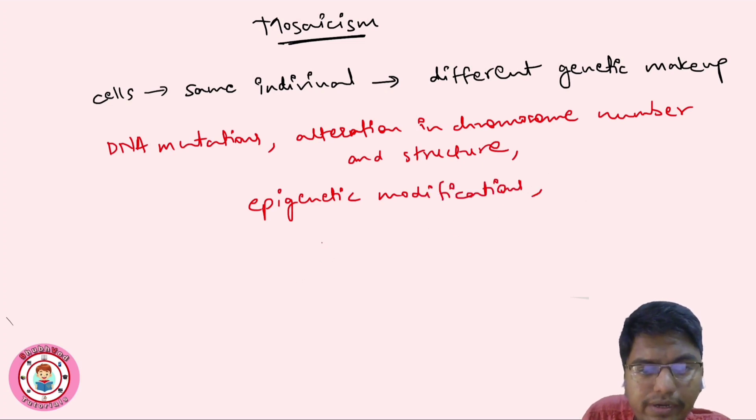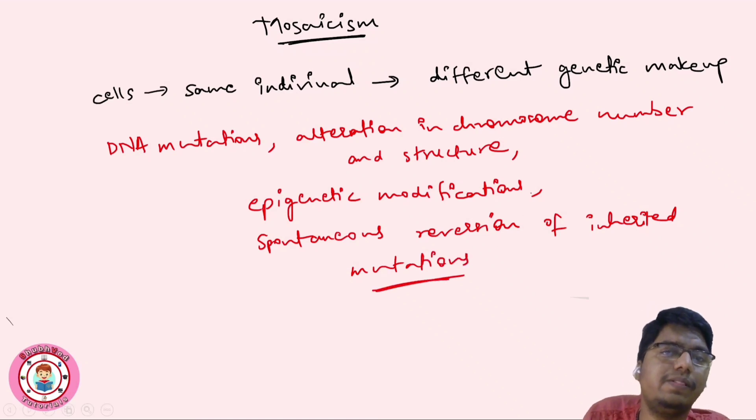Then spontaneous reversion, means reversal of inherited mutation or transformation. So all these lead to the mosaic.